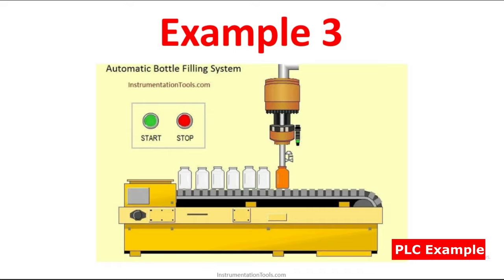Now let us discuss the concept. We are going to fill a cool drink or some drink into the bottle. First we have to start the process. When you start the process, you have to turn on your conveyor, because only then the bottle will get moved. When you press the start push button, your conveyor is on. Once the conveyor is on, the bottle is getting moved. Once the bottle reaches the sensor position, the sensor will give an input signal, and by using that input we know the bottle is there and we can start filling.